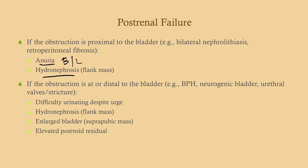A unilateral ureteral obstruction causes hydronephrosis on the affected side but does not cause post-renal failure — it must be bilateral. If the obstruction is distal to the bladder, i.e., at the urethra, you'll see bilateral hydronephrosis plus a suprapubic mass from the enlarged bladder. The problem isn't making urine — it's getting urine out of the bladder. You'll also see an elevated post-void residual and difficulty urinating despite the urge.